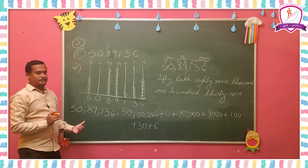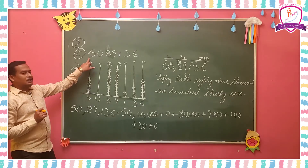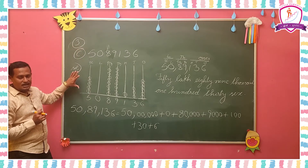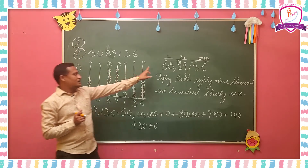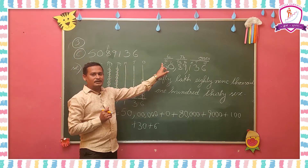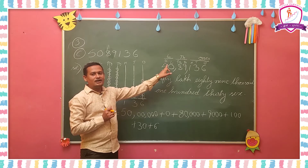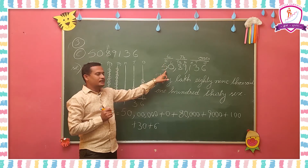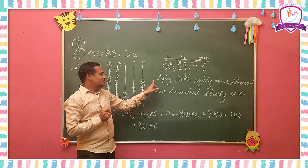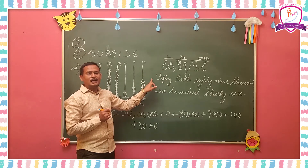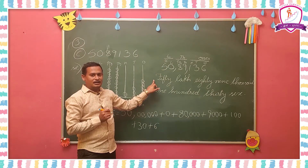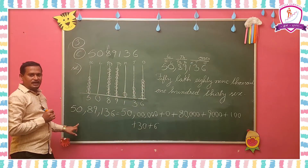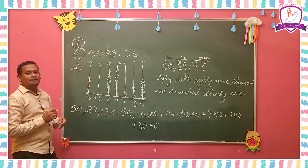So, first you have to represent the given number on the abacus. Second, copy that number and put commas according to the Indian place value system. Third, write the number name. And fourth, write the expanded form. Like this, you have to complete the remaining sums.